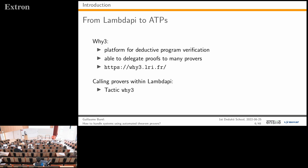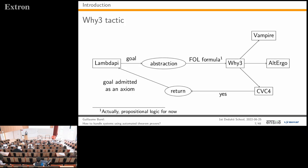Using Why3, a tactic has been added to lambda-pi. Starting from a lambda-pi goal, you abstract the goal—since automated theorem provers won't accept the full lambda-pi language—to obtain a first-order formula (currently only propositional). Then you call Why3 on this formula to delegate the proof to various provers such as Vampire, Alt-Ergo, or CVC4, which report whether they found a proof.